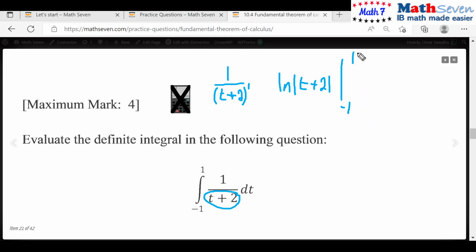Now you substitute one for t, so it becomes ln absolute value of one plus two, minus substitute minus one, so it becomes ln absolute value of minus one plus two.